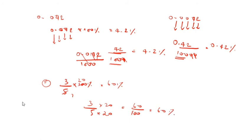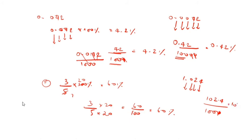Now we will see 1.024. How do you convert it into percentage form? 1s, 10s, 100s, 1000s — so 1.024 means 1024 divided by 1000. Cancel two zeros, what comes? Point comes, giving 102.4 percentage.